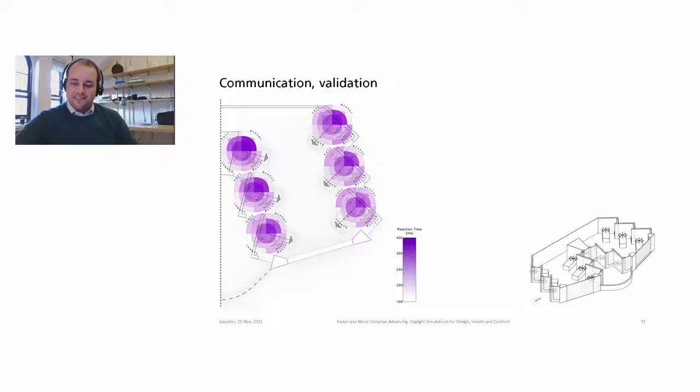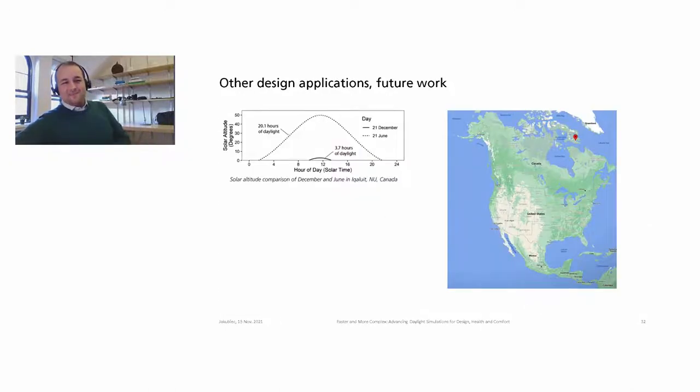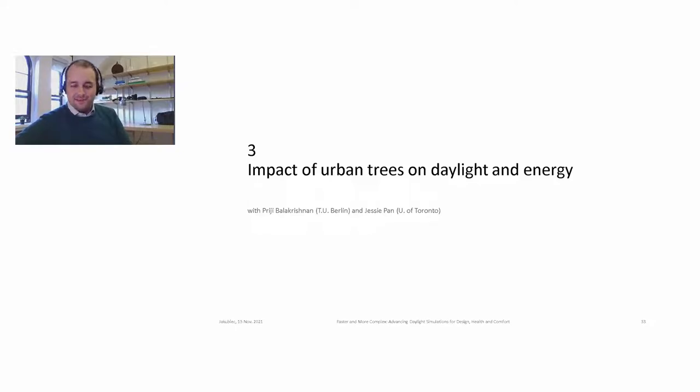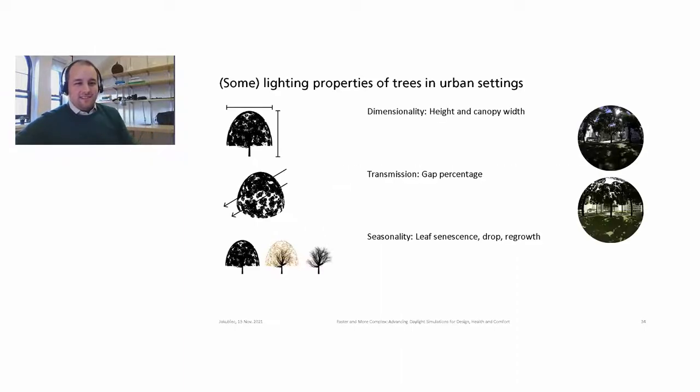I'm going to just skip through a couple of slides because I took too long talking about some things. But last project, and I'm going to go through it in about two and a half minutes, is the impact of trees. So this is with Pridji Balakrishnan and Jesse Pan. And trees are very interesting. They're an aspect of the outdoor environment that are difficult to model and difficult to simulate in a certain sense. They have lots of interesting properties, their dimensionality, how much light passes through their canopies, and I think most specifically here, the seasonality. So when do the leaves senesce? When do they change color? When do they drop? When do they regrow? It's a dynamic exterior environment that can significantly impact daylight levels.